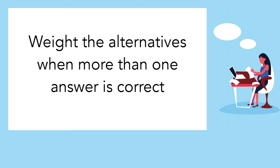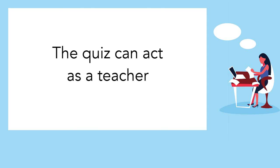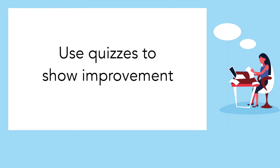If there's more than one correct answer, we can score the correct alternatives differently. In our first example — why can fungus live underground? — the alternative 'because it doesn't use photosynthesis' could receive a higher score than 'because it doesn't need sunlight', because it represents a more accurate explanation. You can provide students with helpful hints and let them do the test until they have understood the material. You can also give them a test at the start of the topic and then again at the end — improvement can in itself be a motivating factor for the student.